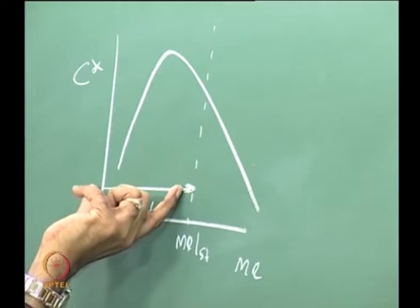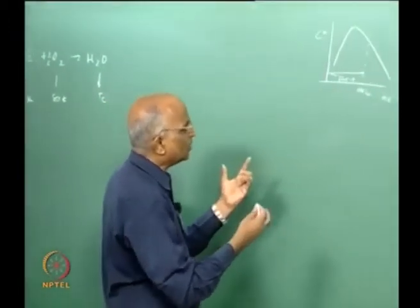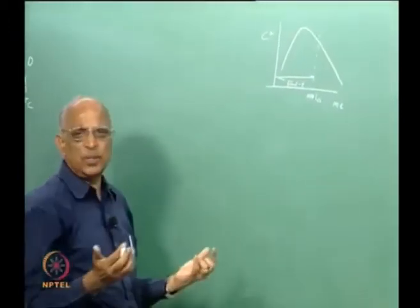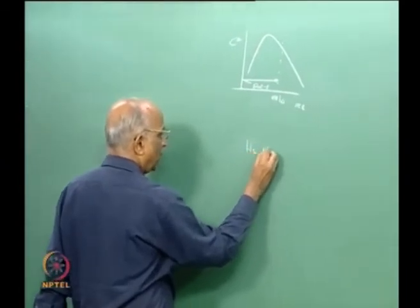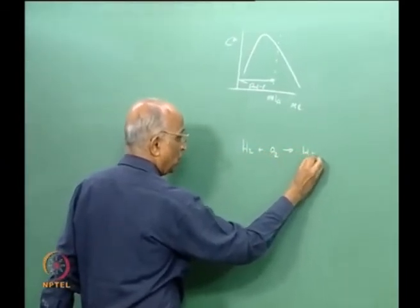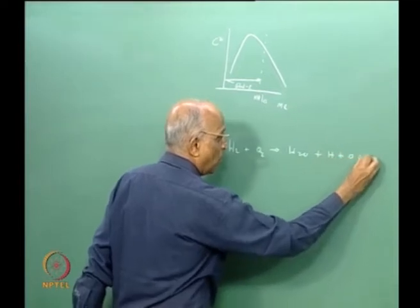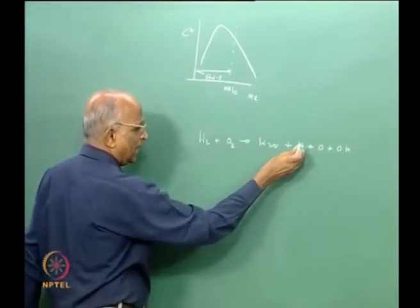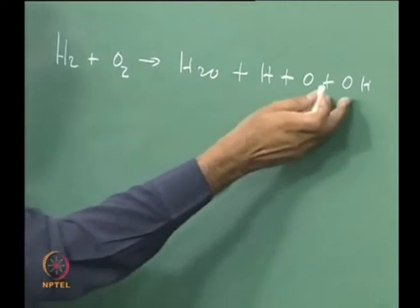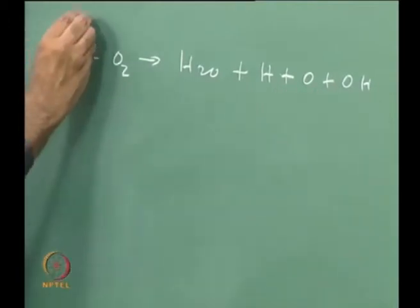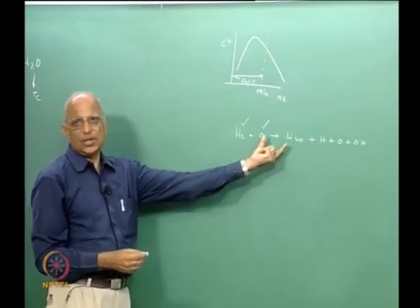Therefore, we normally choose compositions which are fuel rich. Before going to this problem, since we studied the conditions required, let us put down five or six viable propellants. One is hydrogen and oxygen giving H2O, but we want to operate under fuel-rich conditions. We will get products like H2O plus H plus O plus OH and so on, because we do not have sufficient oxidizer to form water. Hydrogen-oxygen could be one propellant; let us do a small problem under stoichiometric conditions and then extend it to fuel-rich.